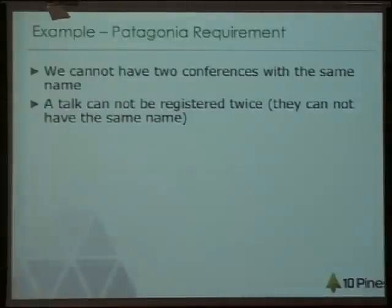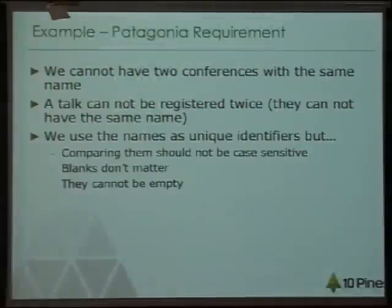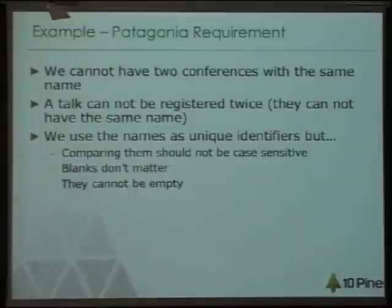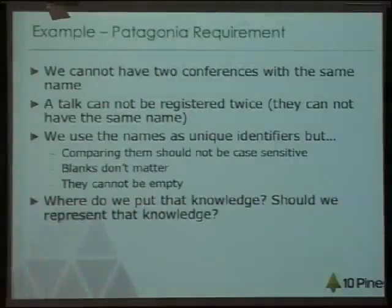Also, we cannot have two talks with the same name, because we are talking about the same talk. We have names for the conference and for the talks, and those names should not be case sensitive when you compare them. They shouldn't care about blanks, they cannot be empty — they have some restrictions. So, how do you model these constraints?